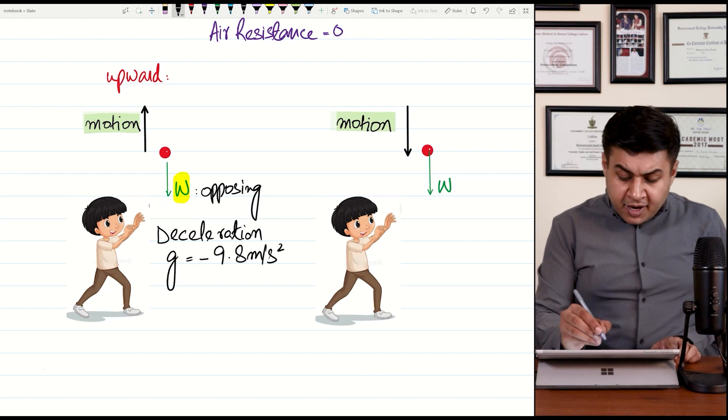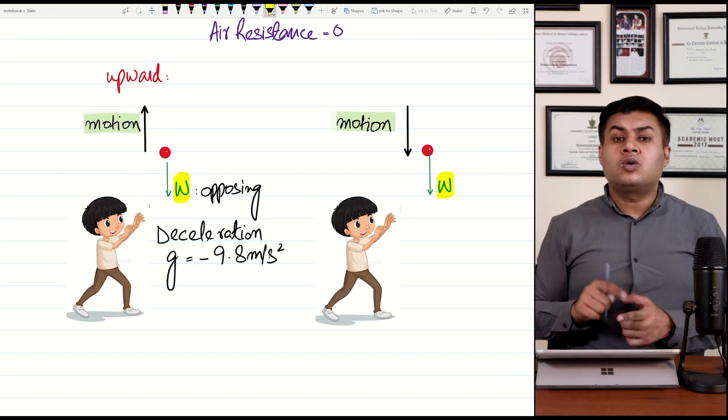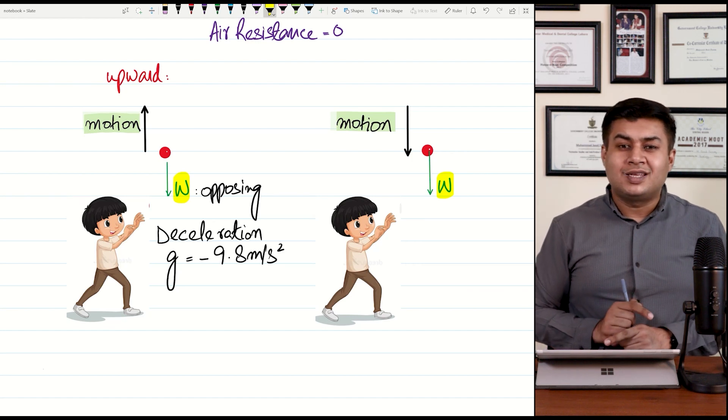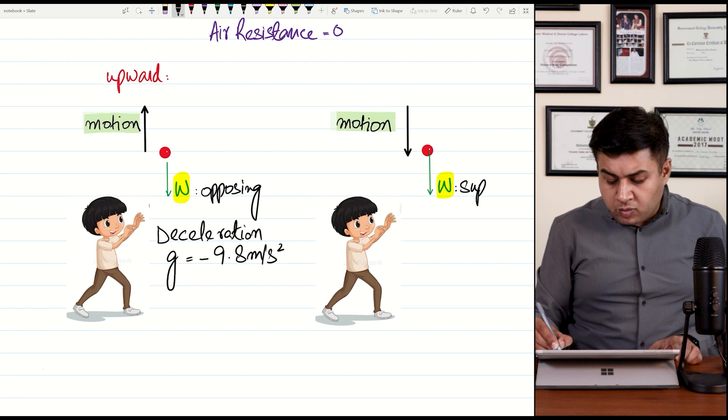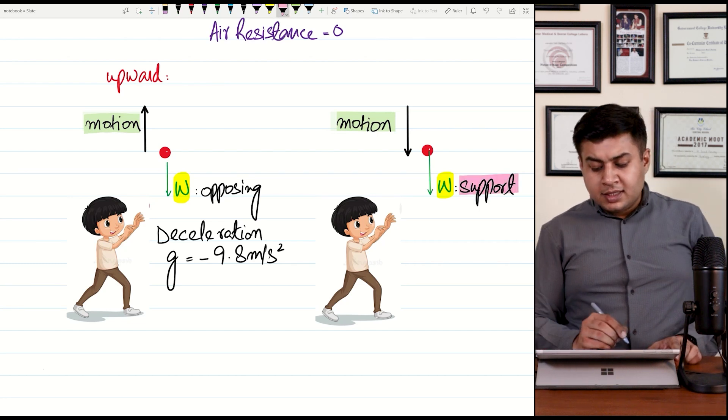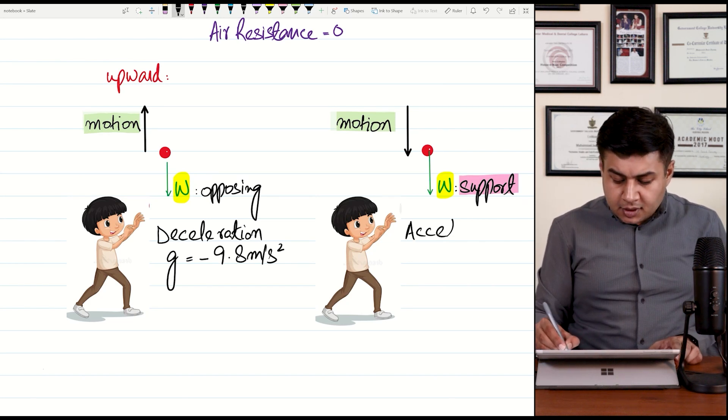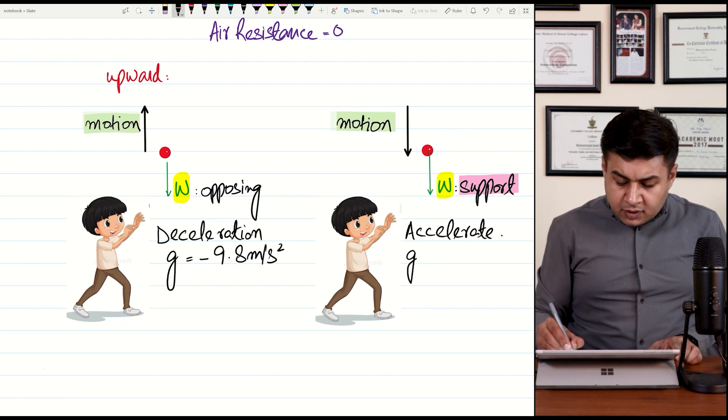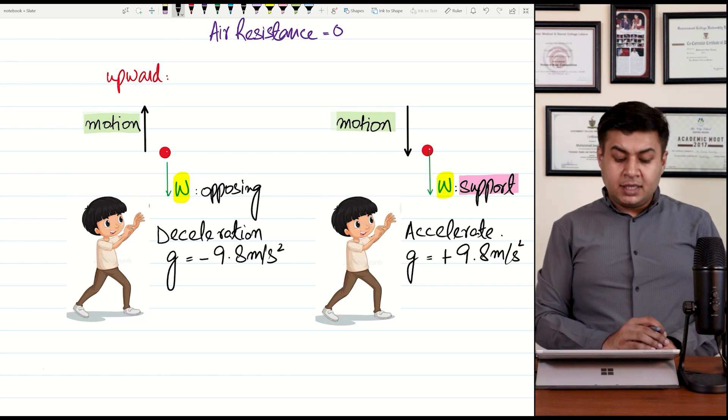Second, the weight is acting downwards. The weight is supporting or opposing? Now this is very clear that it will support the downward motion of the ball. It will support downward motion of ball. That's why in downward direction this ball will accelerate. This ball will accelerate. That's why the value of g for the downward journey is plus 9.8 meters per second square.